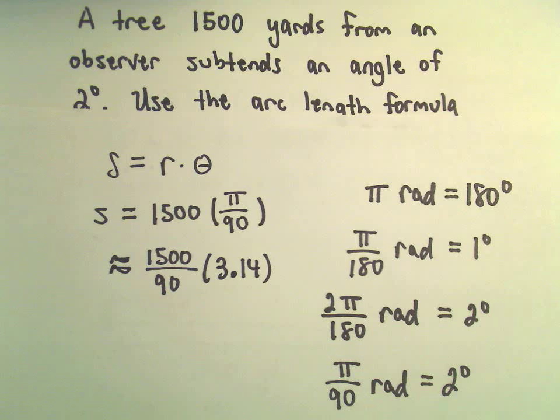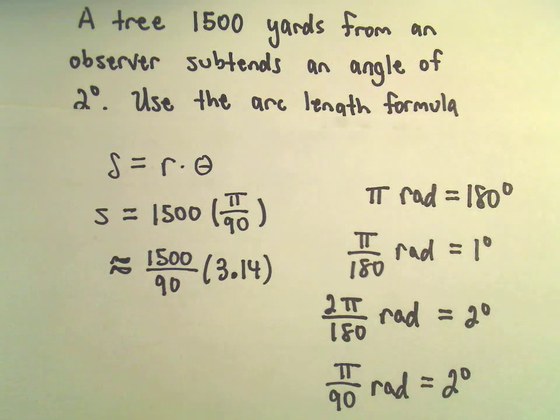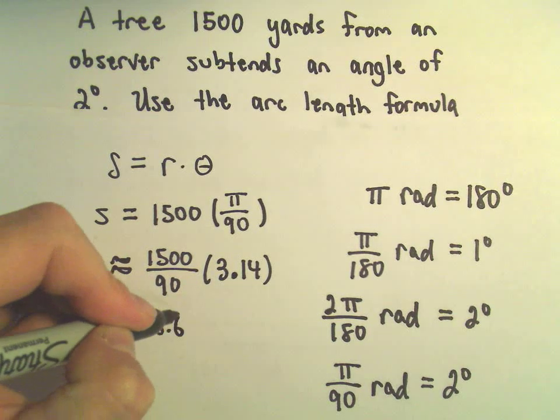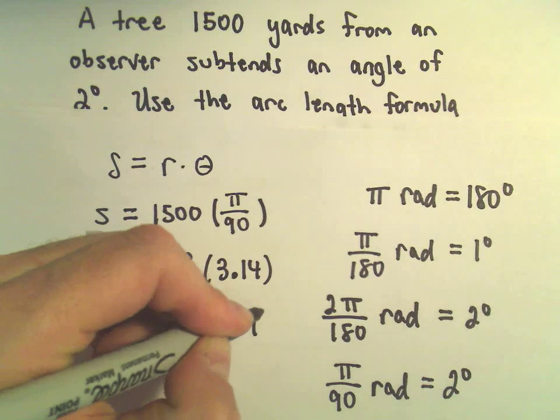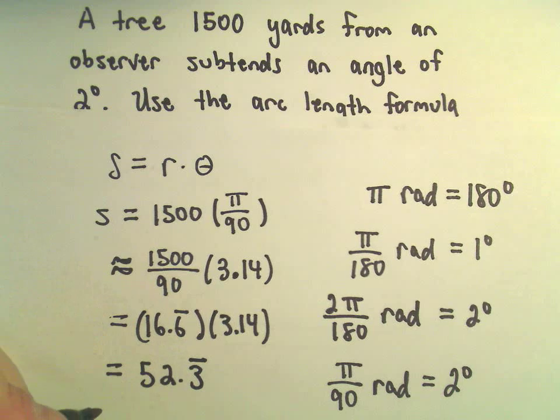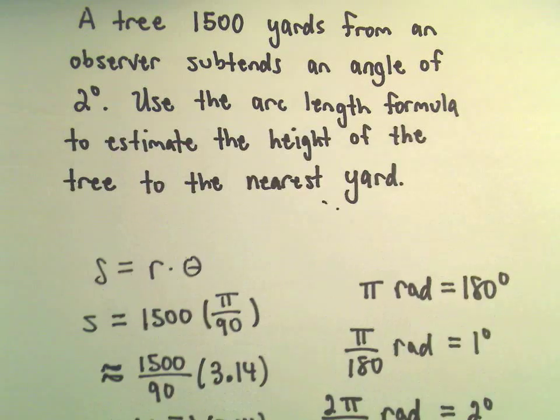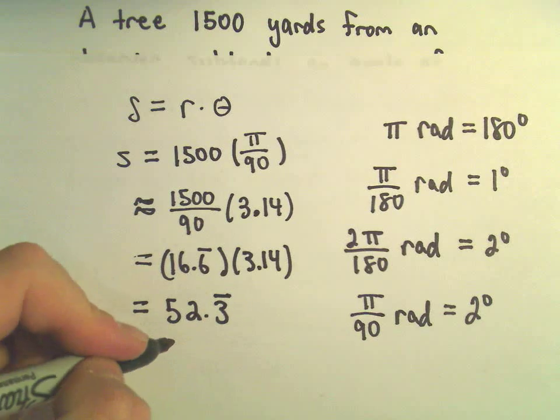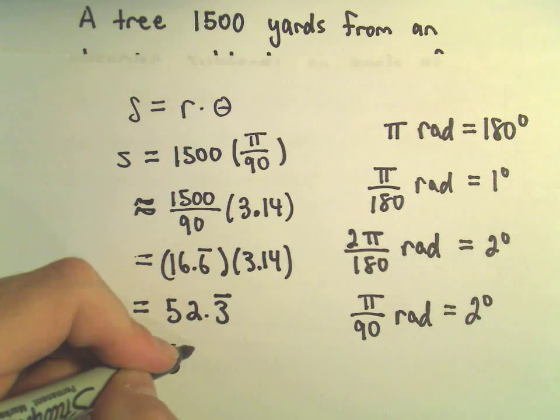We've got 1500 divided by 90. I'm getting that to be 16.6 repeating times 3.14. When I multiply that by 3.14, I'm getting this to equal 52.3 repeating. But we wanted to round this to the nearest yard, so this is pretty close to 52 yards.